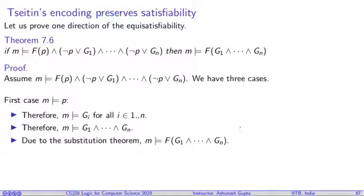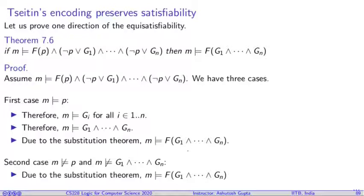Now, there are two more cases. When the first assumption was M satisfies P, naturally, you can say M does not satisfy P. But there is again a case where it happens, I have to consider this situation: M does not satisfy P and simultaneously M does not satisfy G₁ to Gₙ. However, I know that M satisfies F(p). And again, we can apply directly my substitution theorem and obtain that M satisfies F(G₁ ∧ ⋯ ∧ Gₙ).